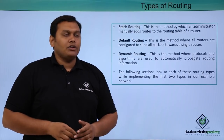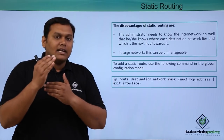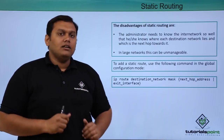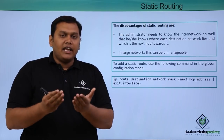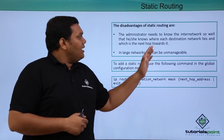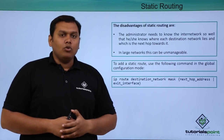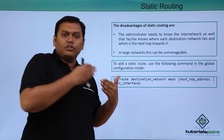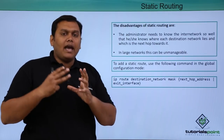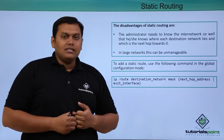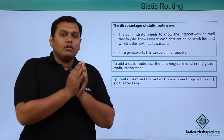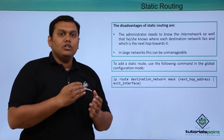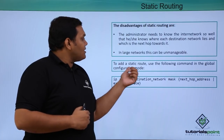Coming to static routing, let's first speak about the disadvantages. The administrator needs to know each and every network topology, as well as devices and internet network information, and must know about the destination networks so that the routing table can be manually updated with route information. In large networks, this is unmanageable, as the network administrator would need to know every topology and device detail across the entire network.